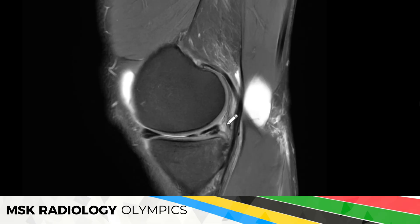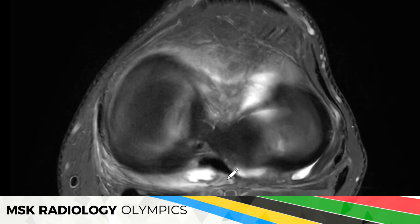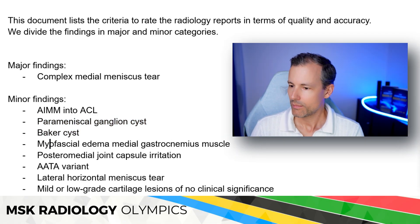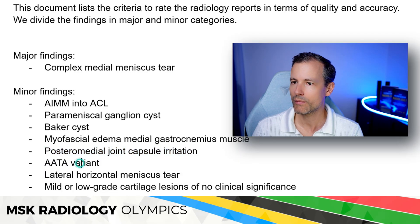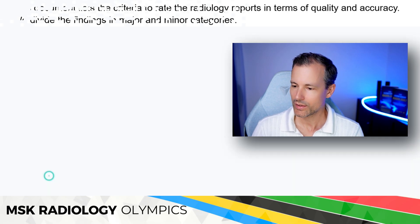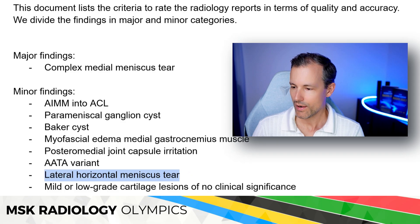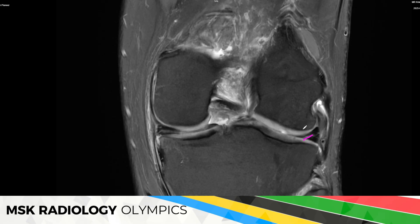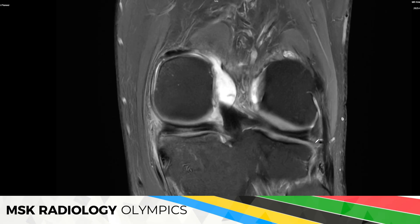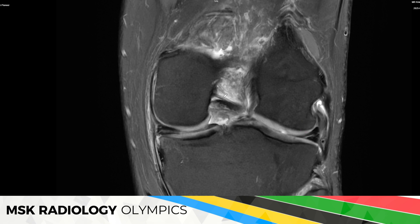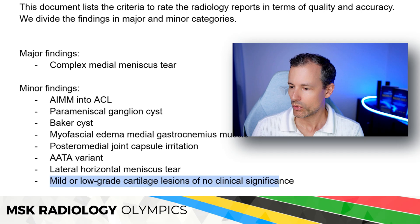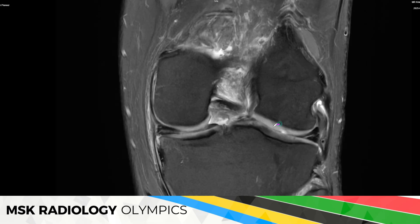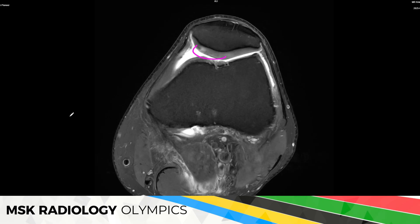There were some parameniscal ganglion cysts posteriorly, likely from the posterior meniscus going into the posterior joint capsule — another finding. The Baker's cyst was mentioned, myofascial edema of the medial gastrocnemius or strain, and posterior medial joint capsule irritation — that very intense edema at the posterior medial joint capsule very typical with meniscal tears. The aberrant anterior tibial artery variant earned an extra point. The lateral horizontal tear of the meniscus also earned an extra point; even though arthroscopy didn't initially confirm it, I kept it as a minor finding. Describing cartilage defects at either the condyle or patella earned another extra point.